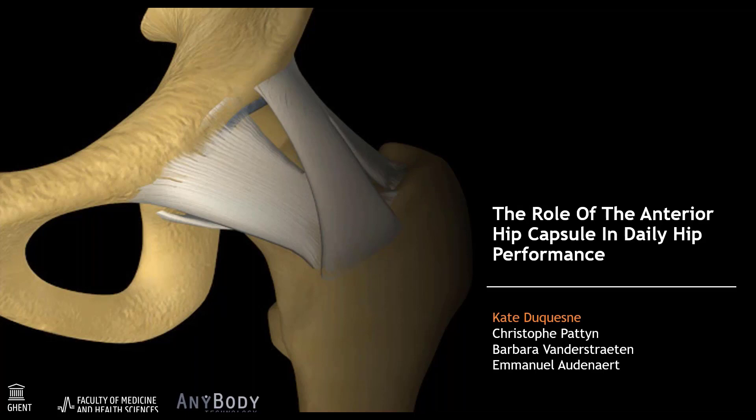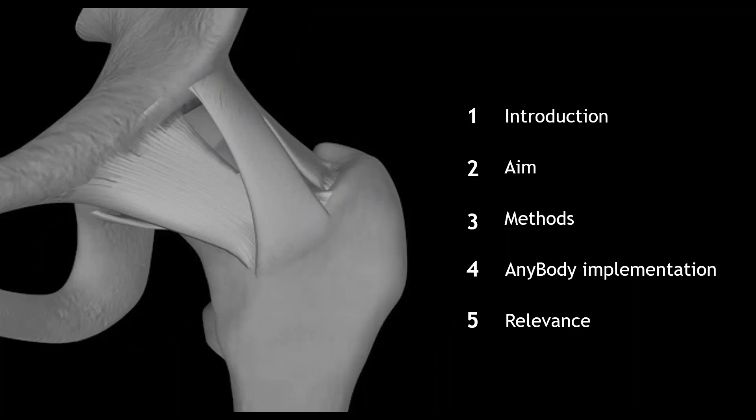Let me start this presentation with an interesting fact. The iliofemoral ligament is the strongest ligament in our body. Nevertheless, in literature, it is said to only have a passive stabilizing function. Isn't this a bit strange? Why would this ligament be so strong if it only serves as an emergency break for occasional hip hyperextension trauma? That was actually the starting point of our investigation. But before diving into the details, I'll give a short introduction and explain what exactly our aim was. Then I'll elaborate on how we did our investigation and how we implemented our model in the Anybody modeling system. Finally, I'll explain the relevance of our findings.